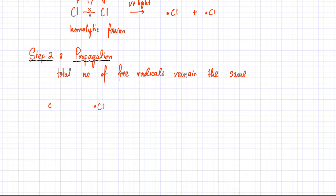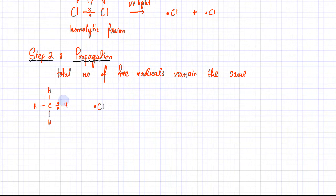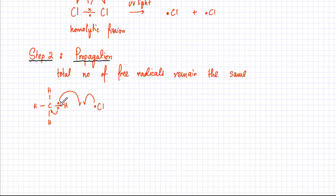We had a molecule of methane with carbon and hydrogen atoms bonded to each other. What this chlorine radical does — because it's very reactive and very electronegative — is it's going to pull hydrogen's electrons away from the carbon bond and bond with that particular hydrogen atom. In the meanwhile, the other electron goes back to carbon, and the C–H bond breaks homolytically.